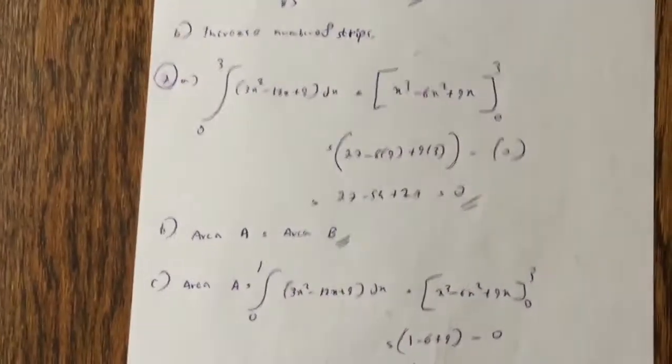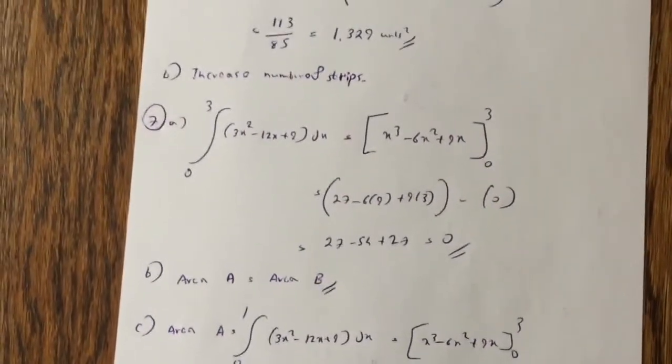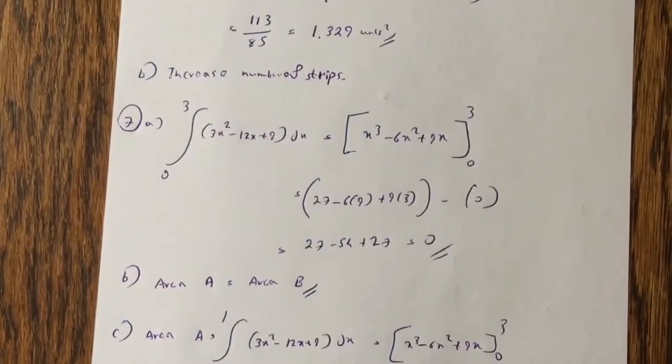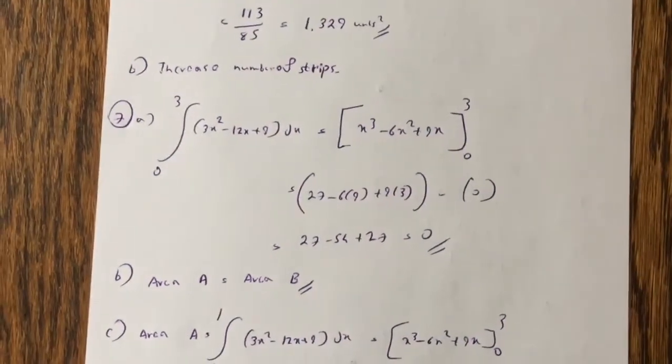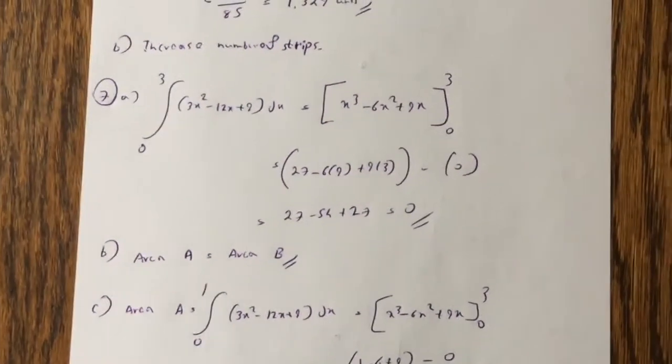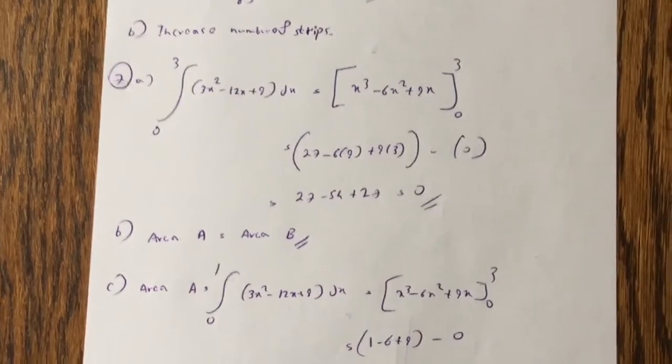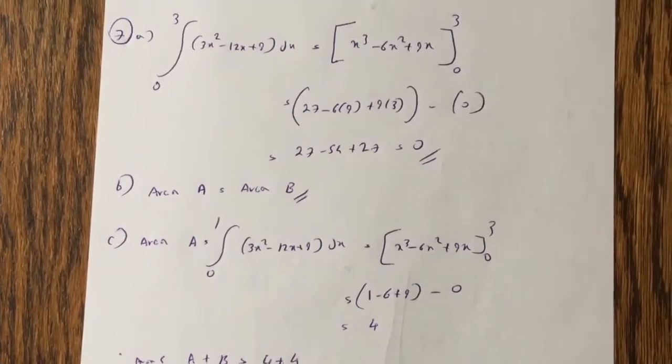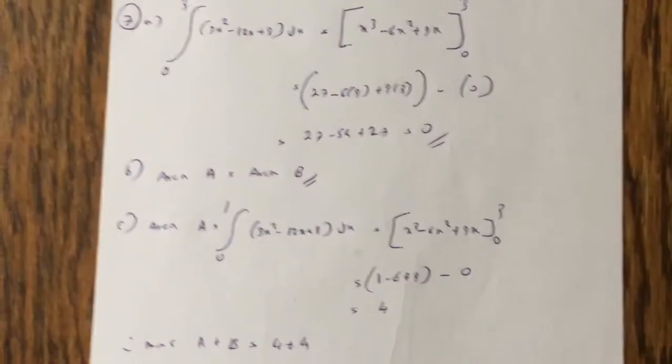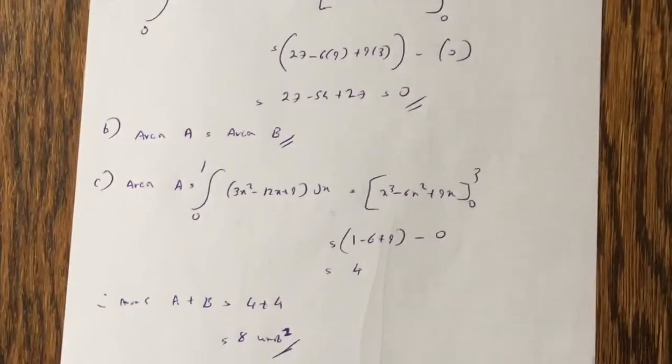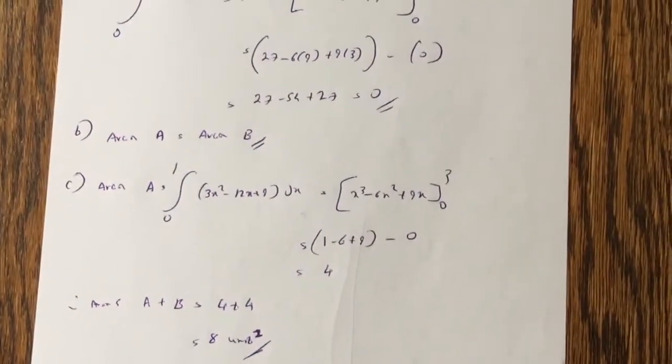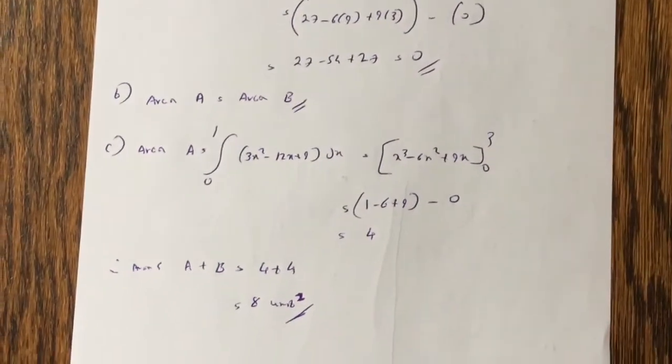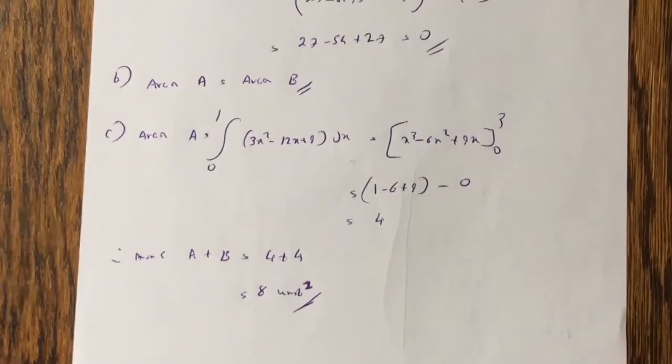Question 7 is an integration question, so integral of 0 to 3, 3x squared minus 12x plus 9 dx, and that works out to be 0, and you plug the values in, this is just a simple question, guys. Area A is equal to area B, that's why it's cancelling out. And if you just work out area A first, so 0 to 1 of that integral, and that works out to be 4, so areas A plus B, because they're equal, so it will be 4 plus 4, so 8 units squared.